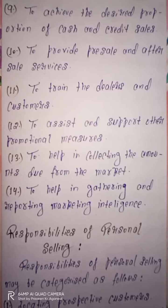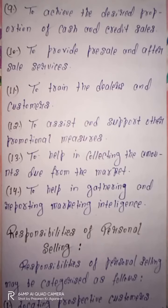Next one is to assist and support other promotional measures. Company advertising ko focus karna chahti hai ya phir other promotional measures ko use karna chahti hai, toh usme complete assistance aur support personal selling ke basis par provide kiya jata hai. Next one is to help in collecting the amounts due from the market. Market me jitni bhi amount due hai company ki, product ko sale karne ke baad, us particular amount ko collect karne me bhi personal selling apna ek important role play karti hai — yani ki ye personal selling hai jiske basis par is particular objective ko achieve kiya ja sakta hai.